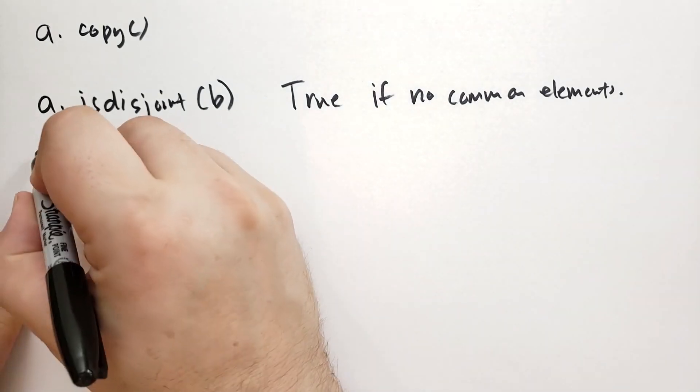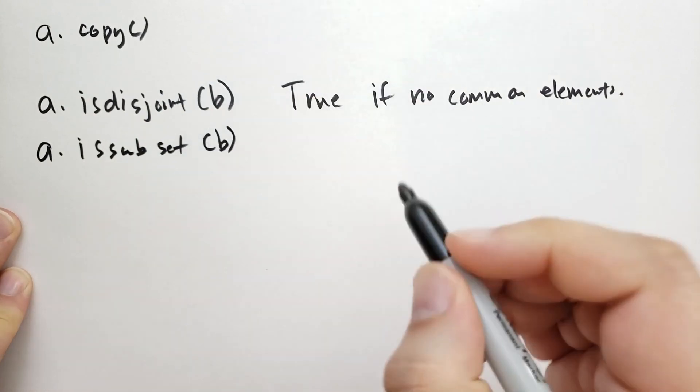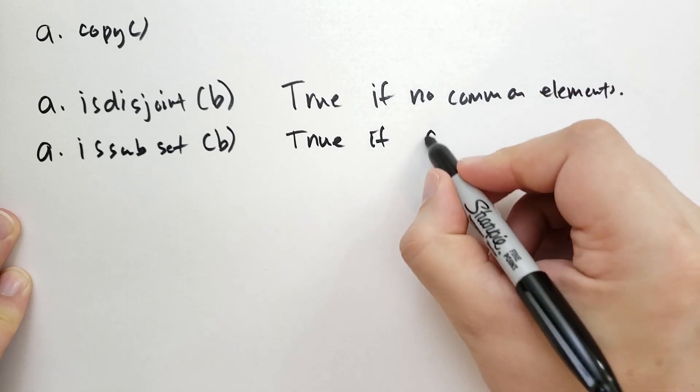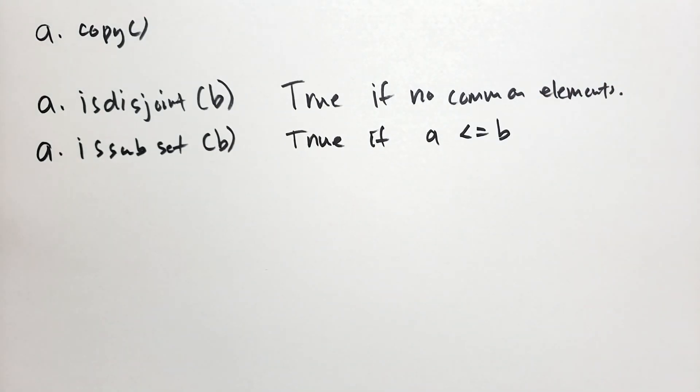So everything in A is not found in B and everything in B is not found in A. Then we also have A is subset. And this will basically be true if A is less than or equal to B. OK, so all the values of A are found in B. But it could also be true if A and B are the same sets.